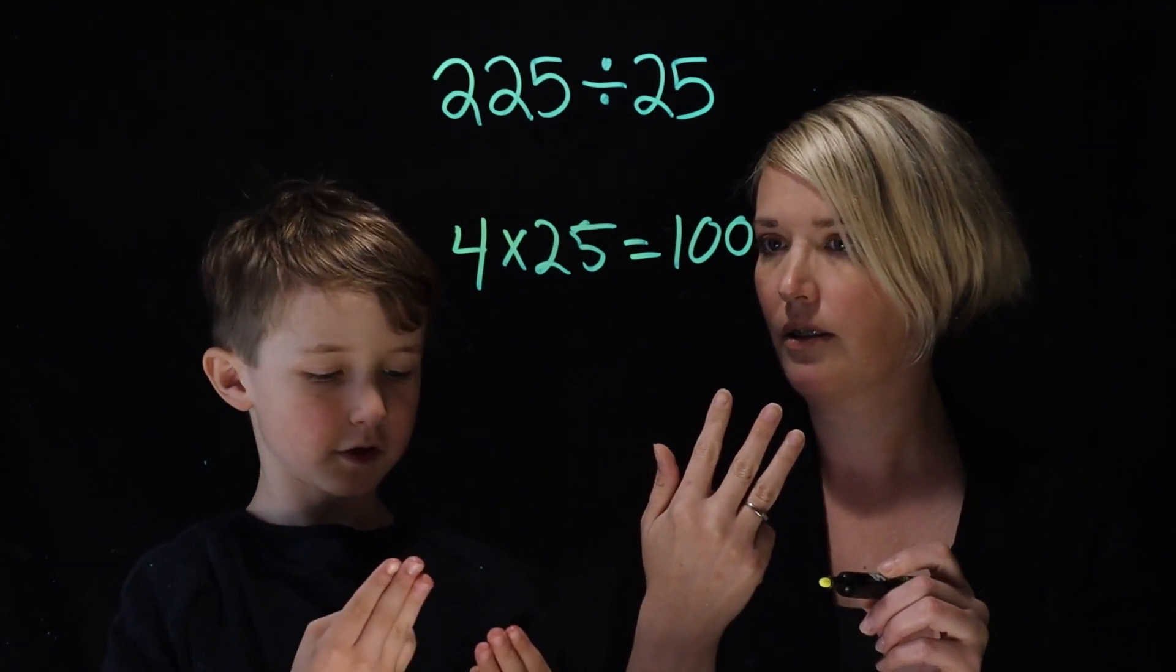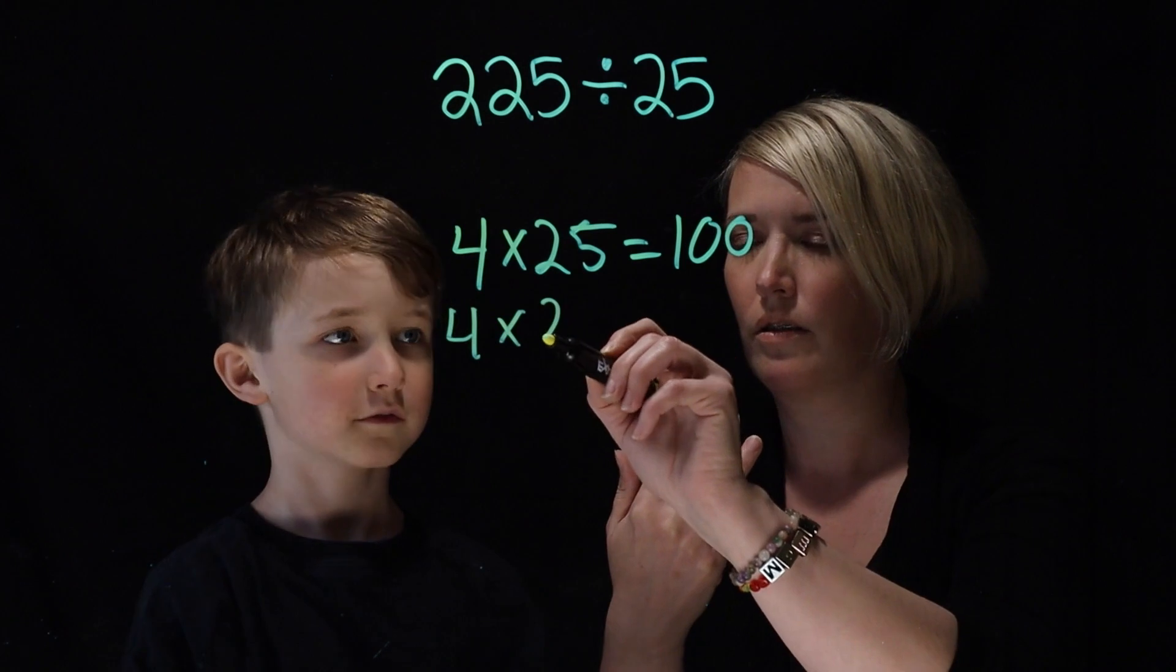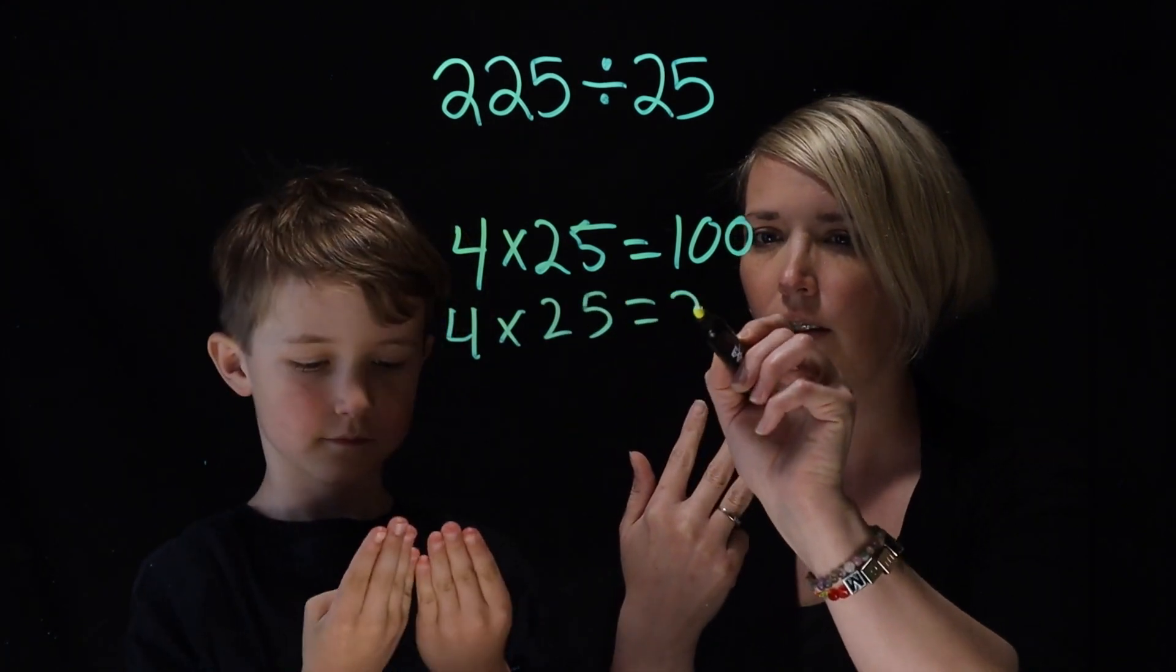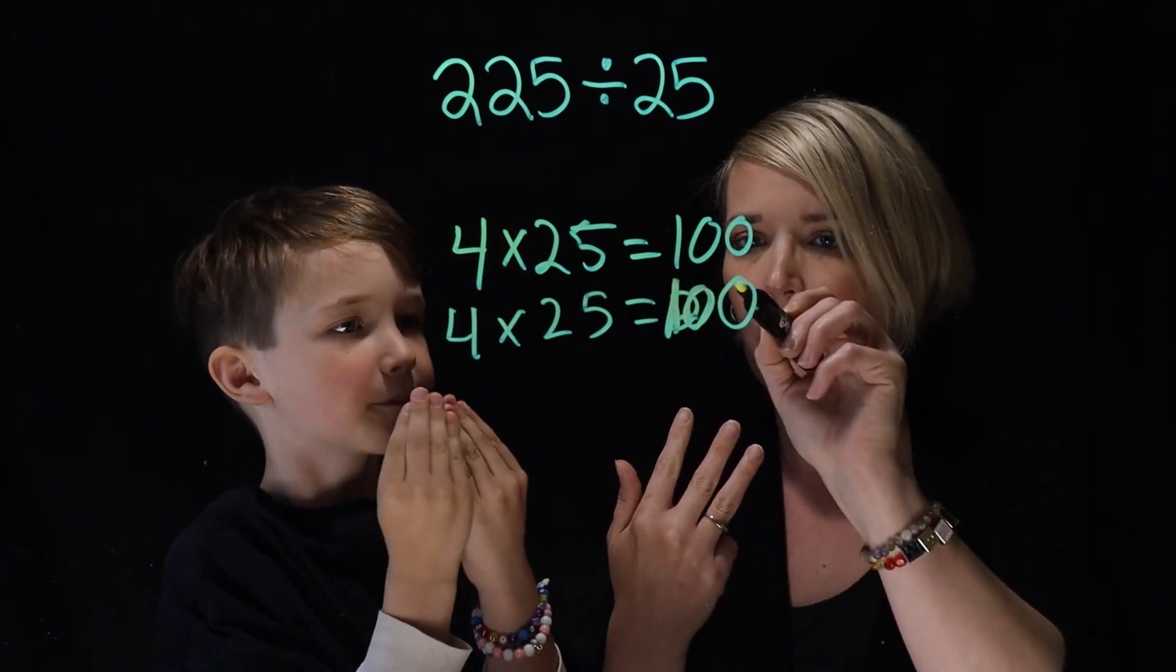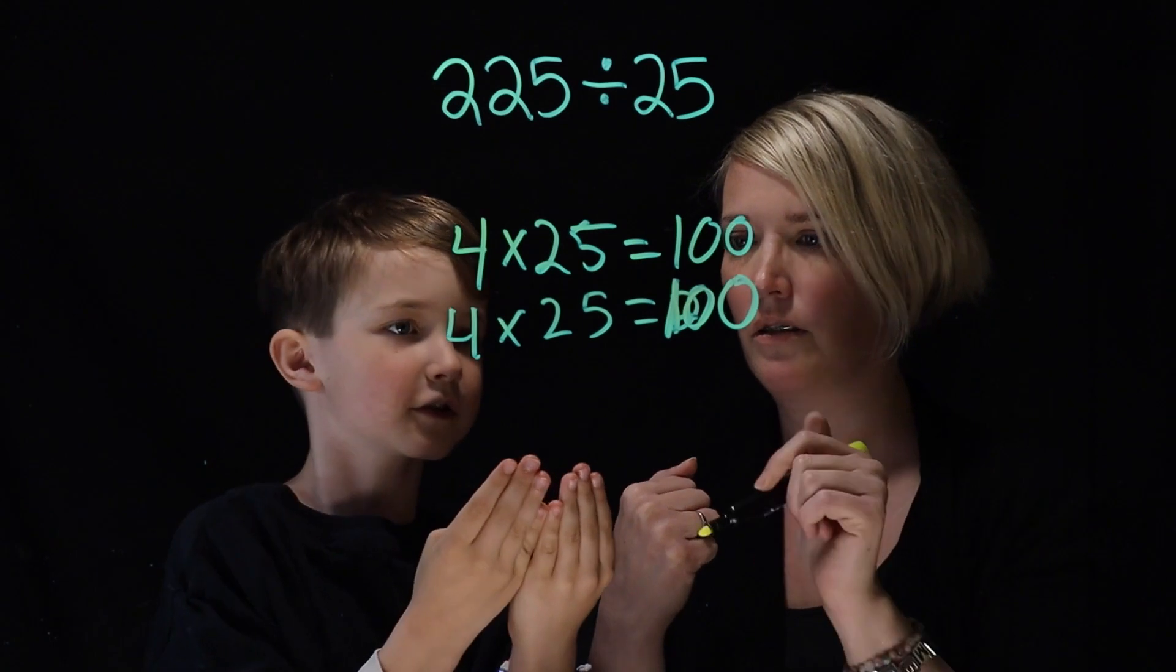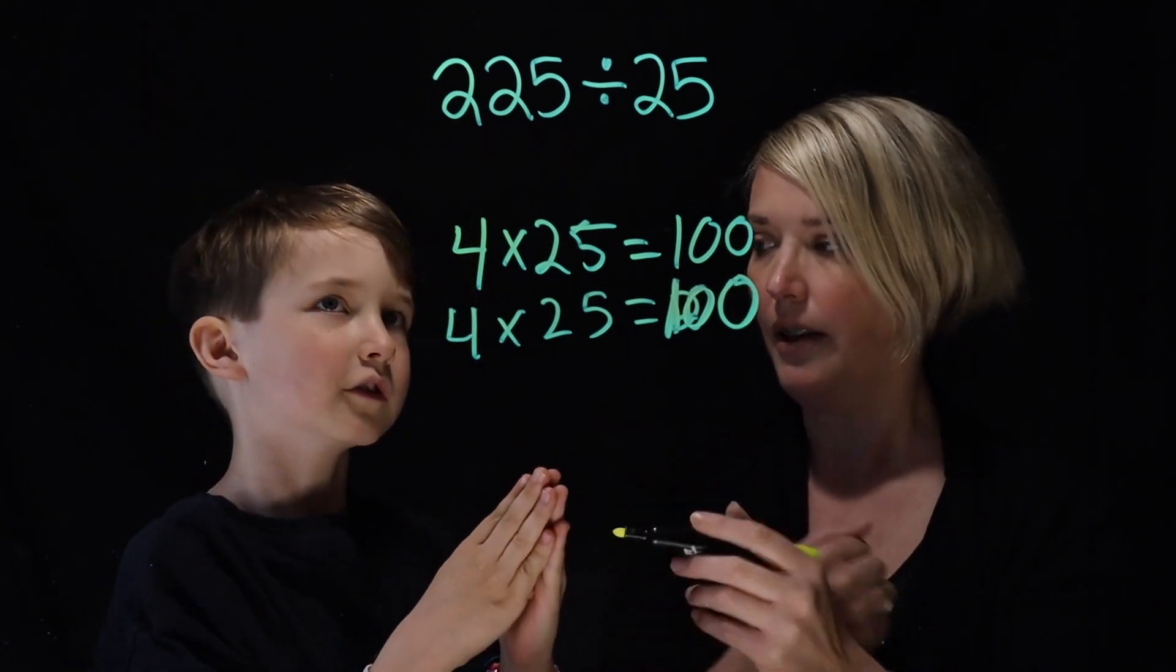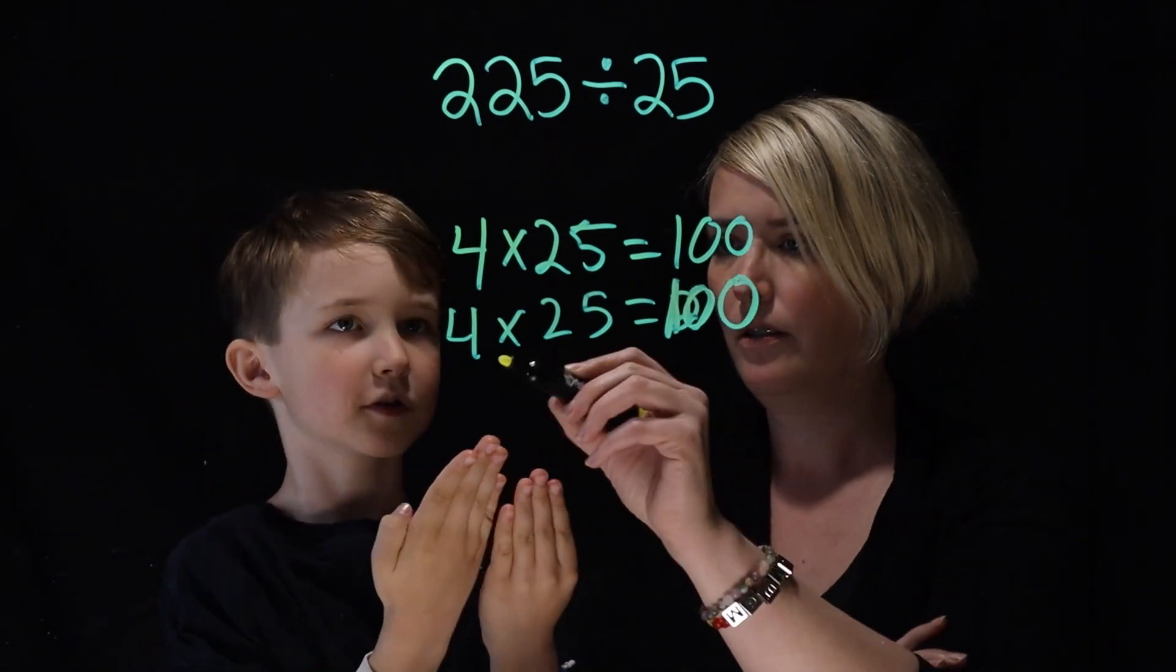Then we do another four to get 200. Oops, sorry. I'm just gonna do this, but in total, you have 200. Yeah. Then this is 200. Yep. Then we're gonna add one more. Okay. To get 225.